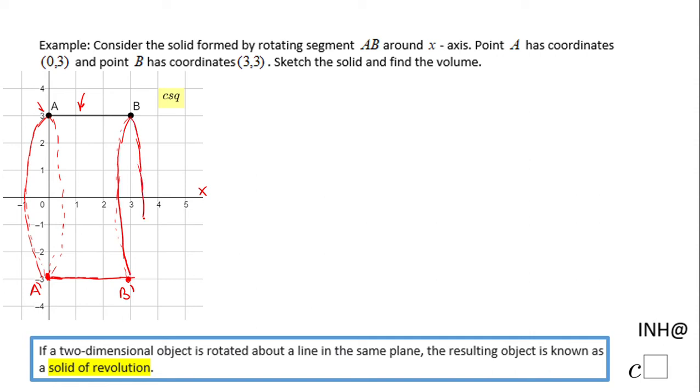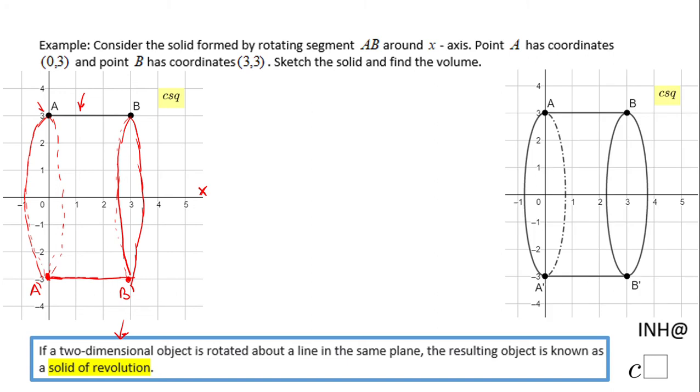This is the object you get when you rotate this two-dimensional object, the line segment AB, about the x-axis. We obtain a cylinder. You can see a better picture here.